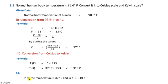So: C = (98.6 − 32) / 1.8. Dividing gives a Celsius temperature of 37°C. And in Kelvin that is 310 K.